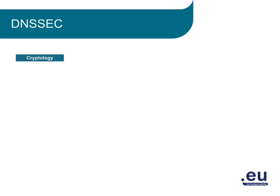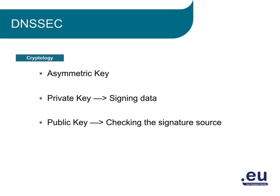To prevent this kind of attack, DNSSEC came into existence. In cryptology, we have something called an asymmetric key — a key pair where one part can be used for signing information and the other can be used for checking the signature. Signing information is done with the private key of the key pair. Checking if the information has been signed by the correct person or program is done with the public part of that key pair. So an asymmetric key pair exists out of two parts: a private key for signing, and a public key that can check the signature source.